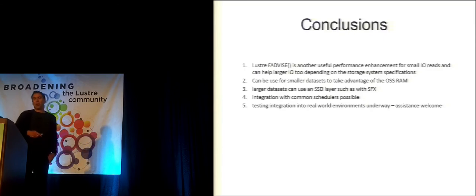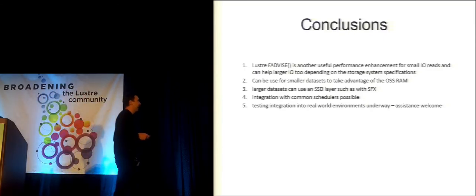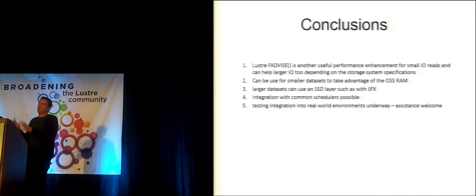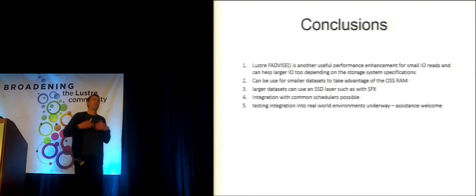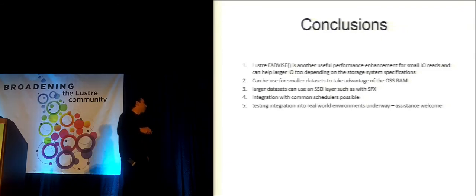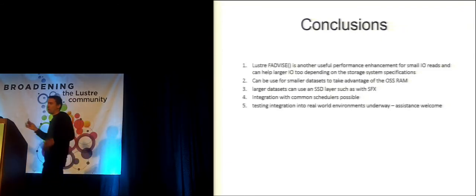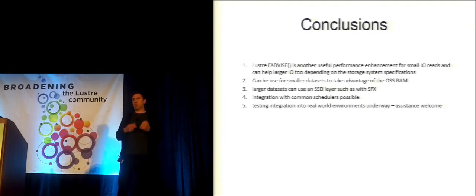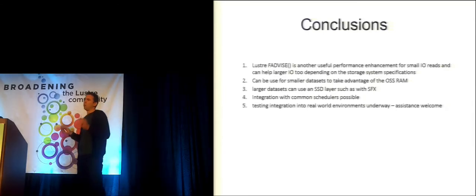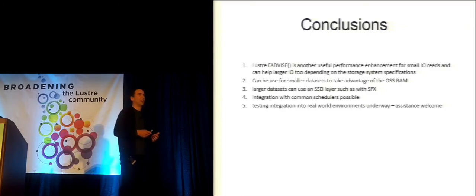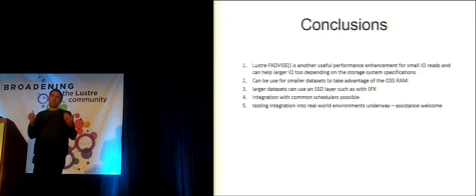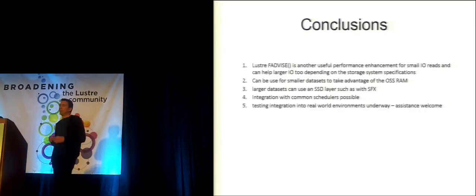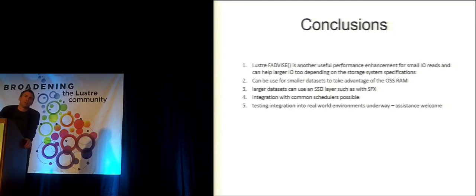In conclusion, we've created a fairly simple framework called Lustre FAdvise, which provides a useful performance enhancement for small I/O reads. It can also help larger I/Os as long as we analyze the architecture — comparing the number of spindles and file striping against the throughput and IOPS of the SSDs. For larger data sets, putting them in RAM requires a lot of memory and may not be practical. The most practical approach is either placing small but frequently accessed files into RAM, or investing in a small number of SSDs to provide a relatively large — say, a terabyte or so — SSD-based cache.